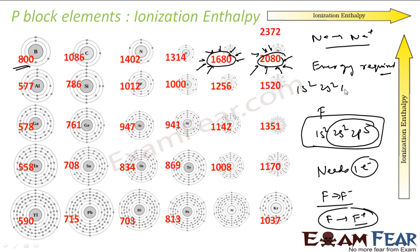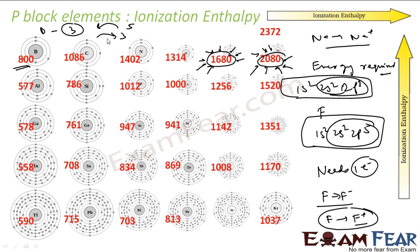Boron has three outermost electrons, so it either needs five more electrons to be happy or it can give three electrons away. It needs only about 800 kilojoules of energy to give one electron. Neon is already happy and won't give electrons — you need very high energy to convince neon. Similarly, fluorine won't give electrons. But boron you can easily convince, because if boron gives three electrons it becomes happy.